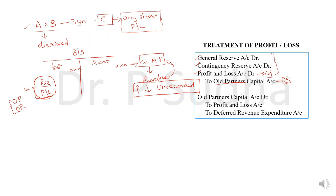Instead of having a credit balance, if the partnership firm has a debit balance in the profit and loss account — meaning they have a loss — then we will credit the profit and loss account and transfer it to old partners' capital account. Apart from that, if there is any deferred revenue expenditure, such as advertisement expenses, that will also be credited and transferred to the old partners' capital account in the old ratio. The old partners will share the losses and deferred revenue expenditure in the old ratio.